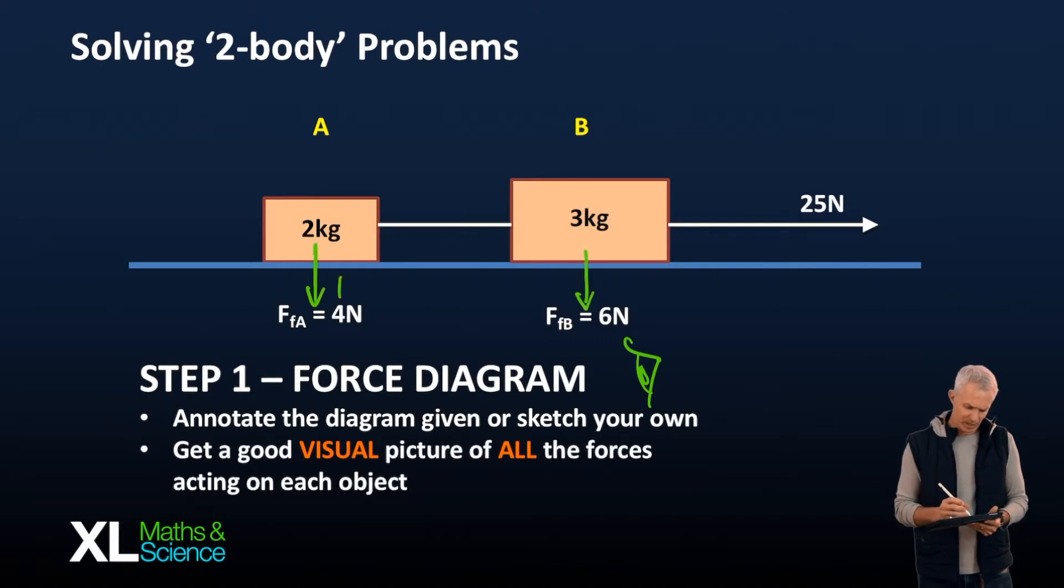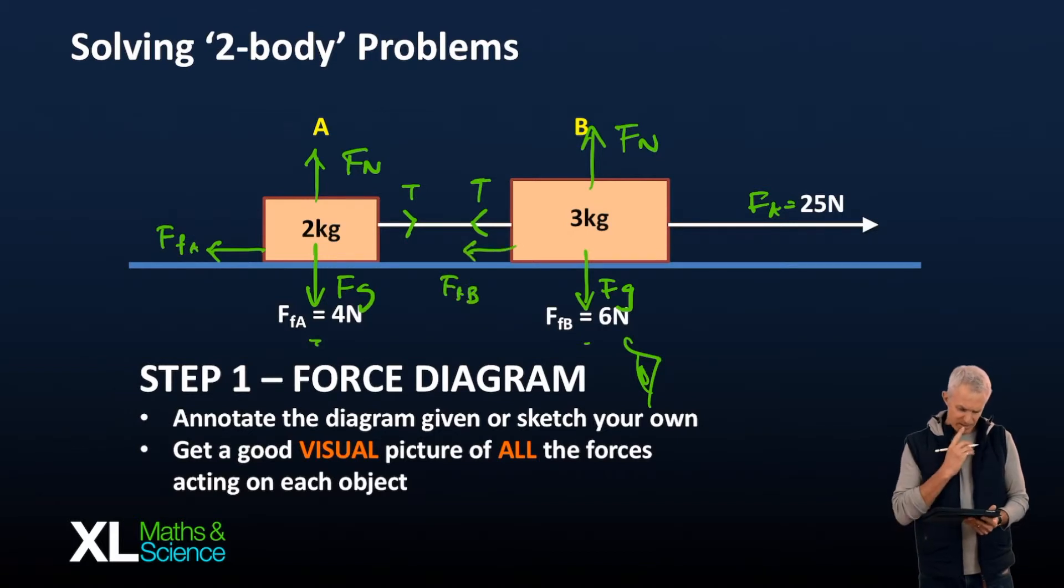So I'm just going to do some annotations here. We know that both objects have FG acting on them and therefore the surface is pushing back with an FN. We've got the applied force already. Then there's tension in the string pulling back on the three, pulling forward on the two. And we are told that there's friction in either case. So then I'll put another little arrow near the bottom there, FFA and FFB. Is that it? Have a look, have a think. Yes, that's it. So the first step is really just a quick sketch of all the forces acting so that you know what's going on.